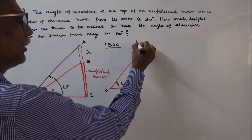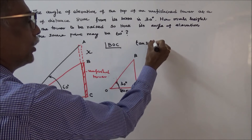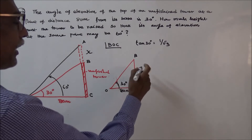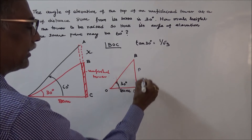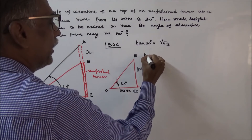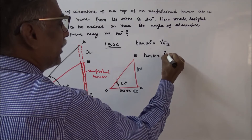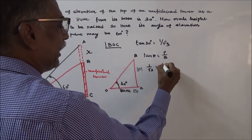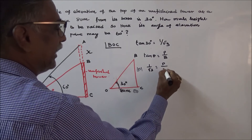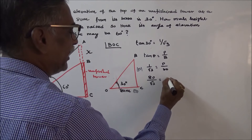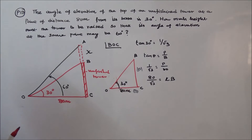Tan 30 is equal to 1 by root 3. The acute angle is 30 degrees; opposite the acute angle is the perpendicular. So tan theta equals perpendicular by base. Here, 1 over root 3 equals perpendicular over base, and the base is 80 meters. So CB equals 80 by root 3.